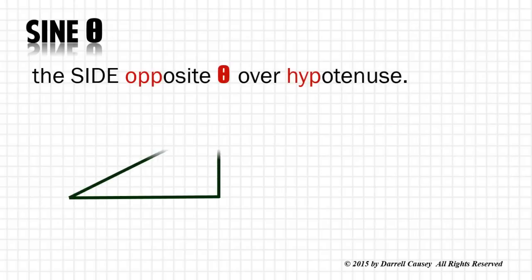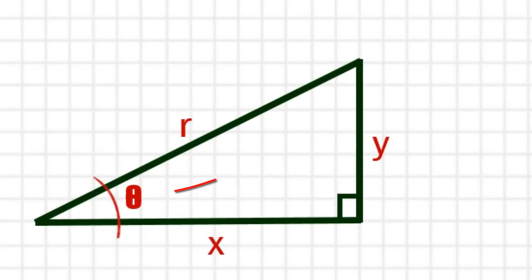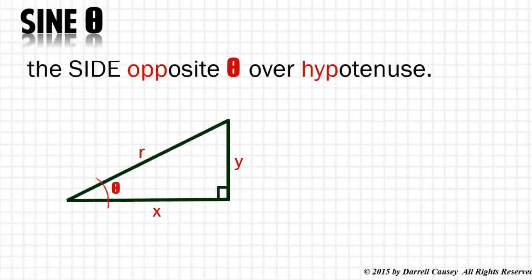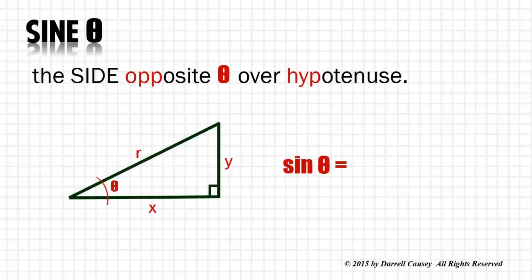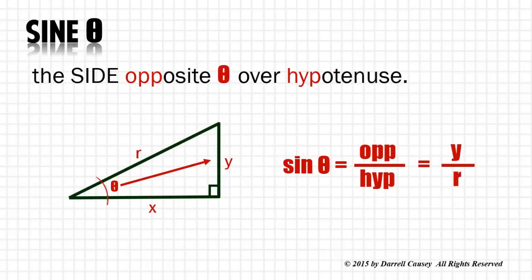What is sine? Sine is defined as the side opposite the angle over hypotenuse. We're going to use theta as a symbol for our angle. So sine θ is opposite over hypotenuse, which is y over r.